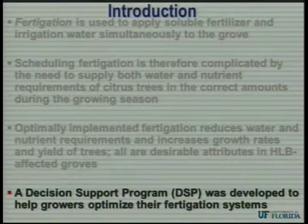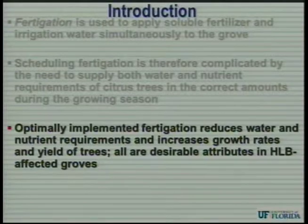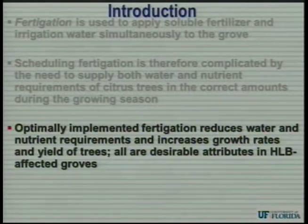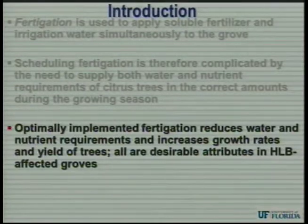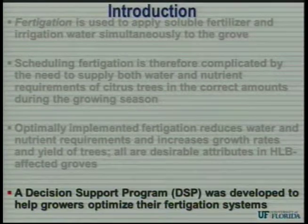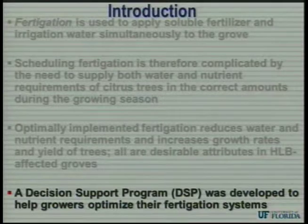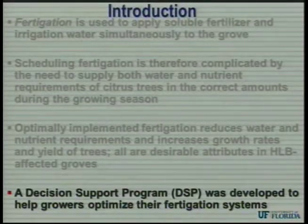Being that it's a perennial crop, that's the entire growing season — it's an important thing. Optimally implemented fertigation has been shown numerous times to reduce water and nutrient requirements and also increases growth rates of the citrus, and ultimately therefore the yields. All are desirable attributes in an HLB-affected grove. The main topic of my talk today is to introduce a decision support program, or DSP, which I developed to help growers optimize their fertigation systems to get the most out of them with citrus growth and yield production.